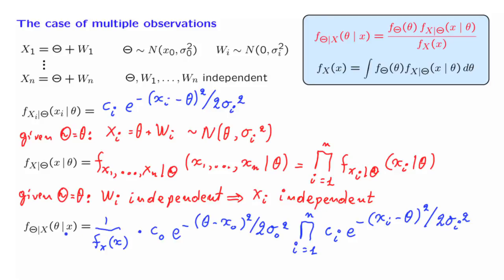Now, once we have obtained the observations, so the value of the random variable capital X, that is the value little x, is fixed. Once it is fixed, then the x's that appear here are constant. So in particular, this term here is a constant. We do not bother with it. And what we have is a constant times an exponential in terms that are quadratic in theta. So we recognize this kind of expression.